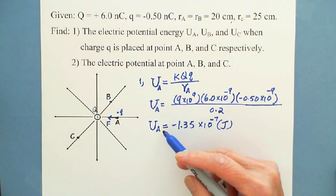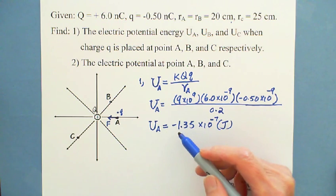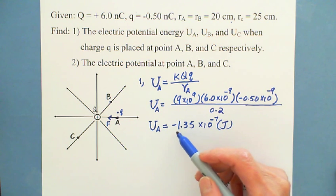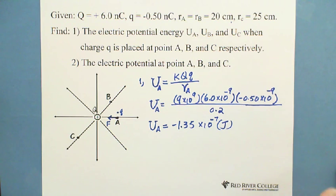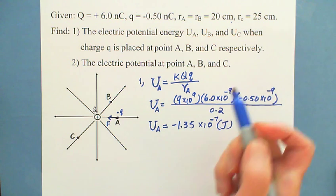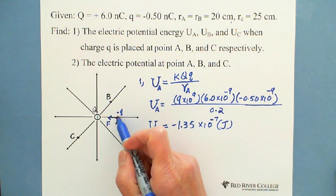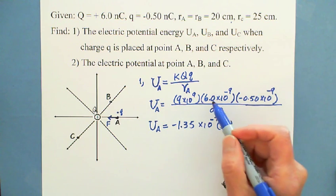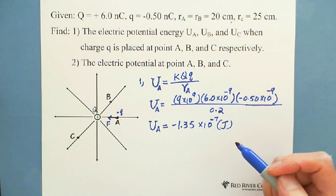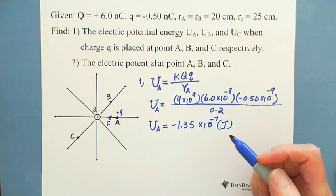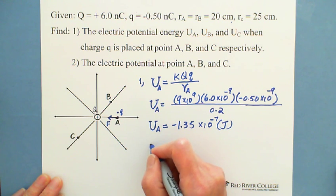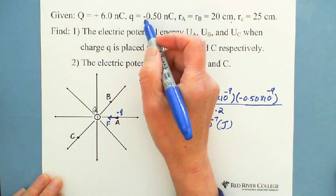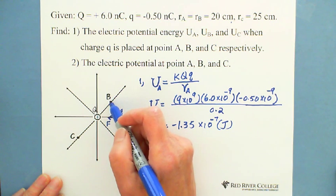One charge is positive, one is negative, so we get a negative result. The negative electric potential energy at this point is because the electric field is doing work — the electric field doing work gives us the negative result. Now, what is the electric potential energy if small q is placed at point B?